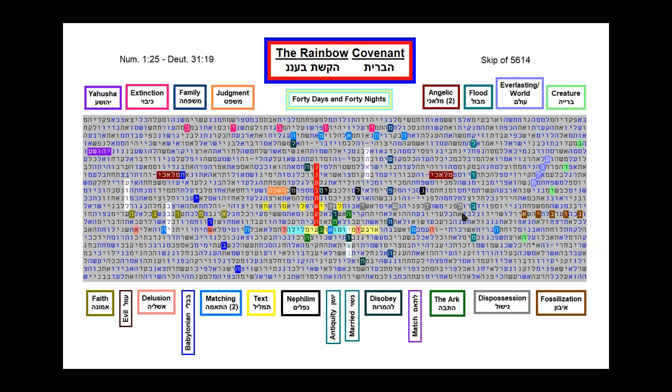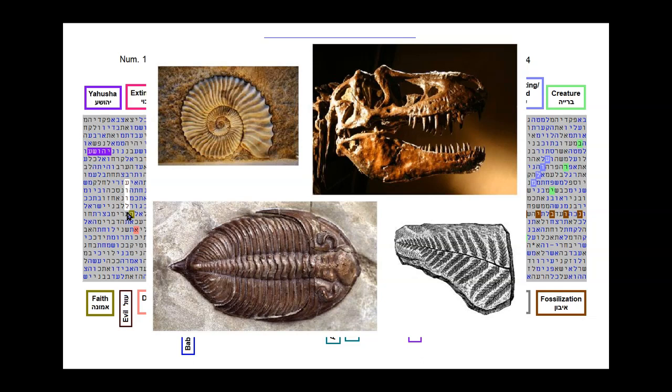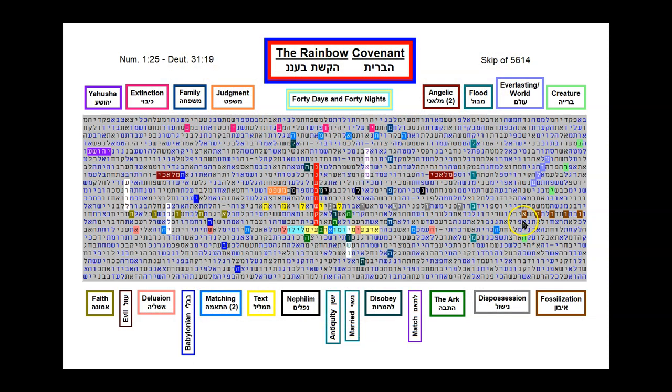Hebrews chapter 11 verse 7 says, 'By faith Noah, being divinely warned of things not yet seen, moved with godly fear, prepared an ark for the saving of his household, by which he condemned the world, and became heir of the righteousness which is according to faith.' And the word faith is here in the gold coloring going to the left. The flood created the perfect conditions for the fossilization of plants and animals that were destroyed in this catastrophic upheaval. Many of these creatures have faced extinction since the time of the flood. The word fossilization is here in the brown coloring going to the right. And extinction is here up at the top going to the right.